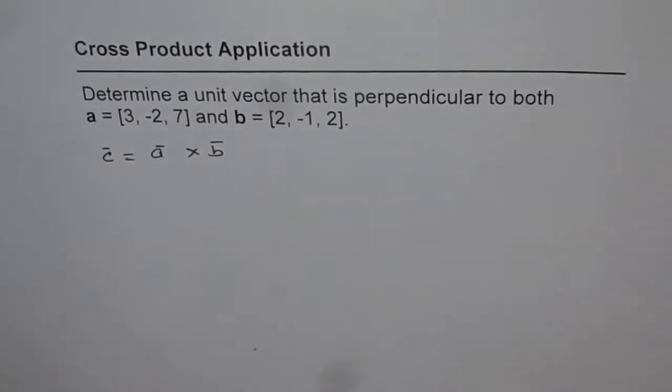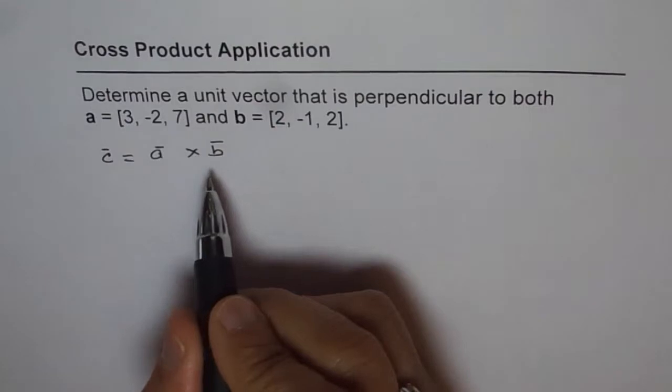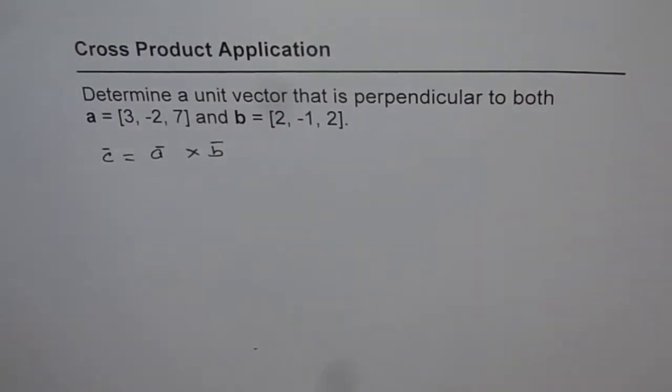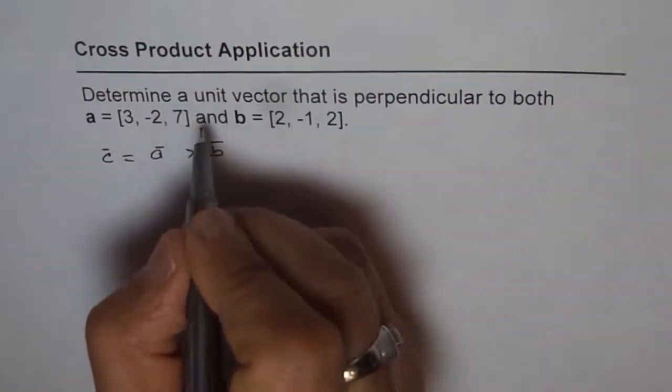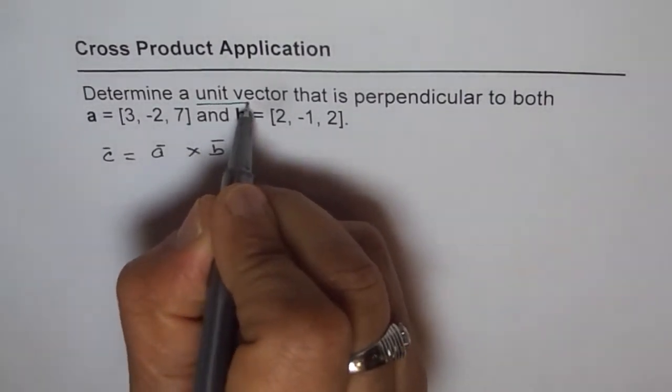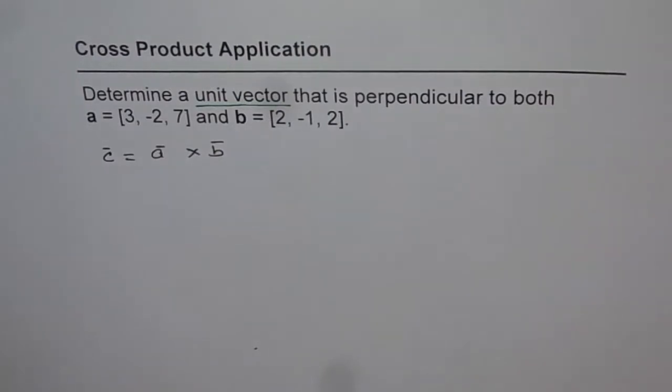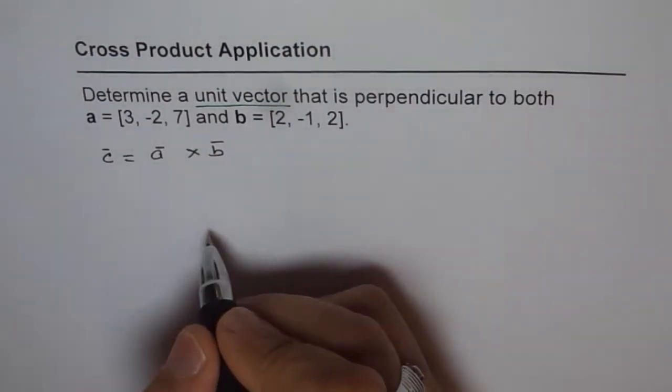I've seen sometimes students will start with cross product and leave the answer as such. But the important thing here is to really understand that it is determined by a unit vector. So unit vector is important. The magnitude has to be one unit. Anyway, let's start with cross product at least.